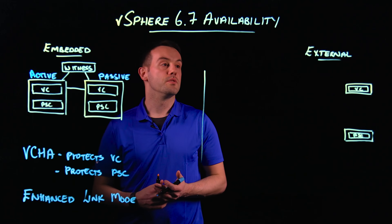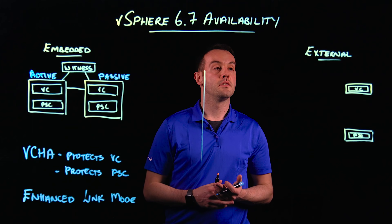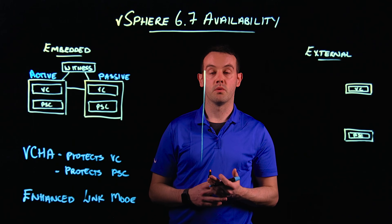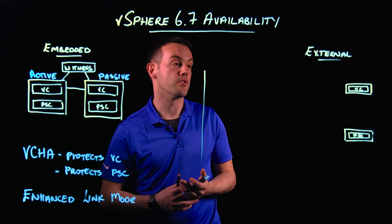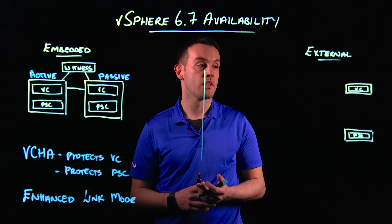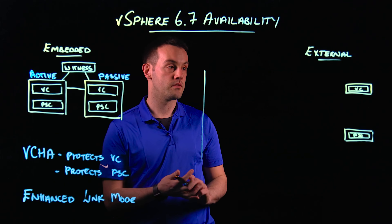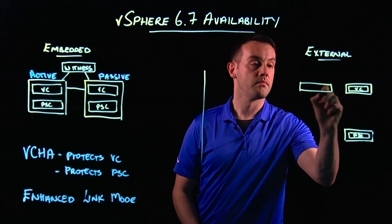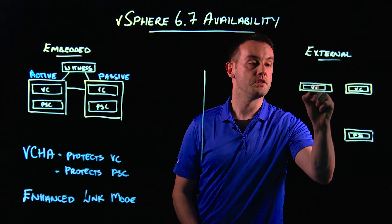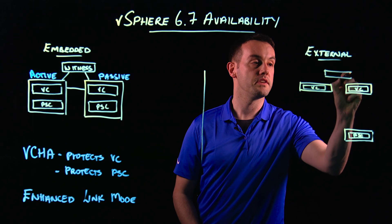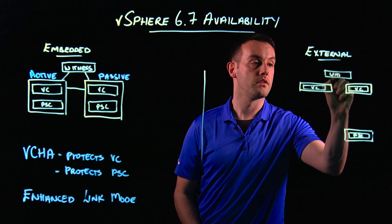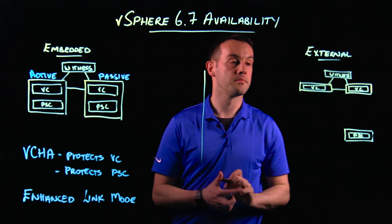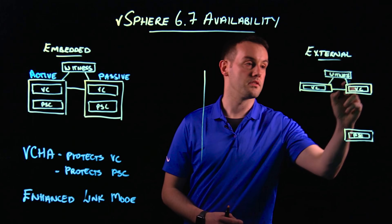Moving over to the external deployment option, we have vCenter Server on one machine and a PSC on another machine. Similar to the embedded option, we can enable vCenter HA to create a vCenter HA cluster, but for the vCenter services only, because our PSC is external. So again, we could have an active and a passive.